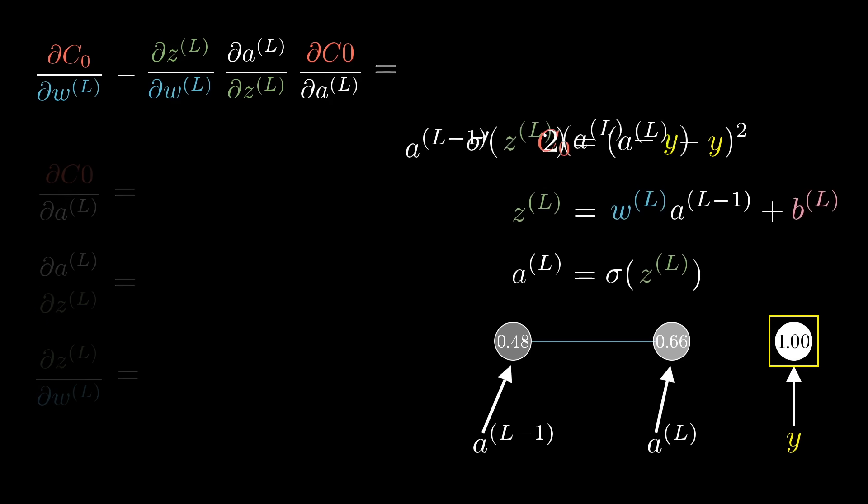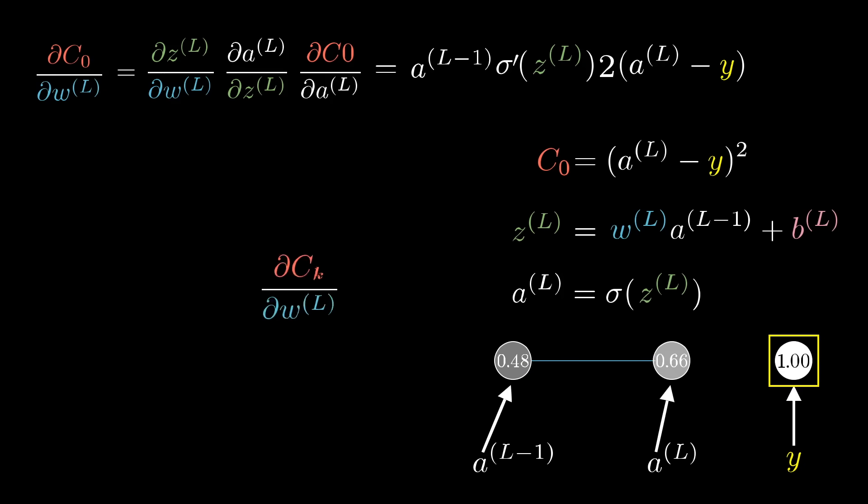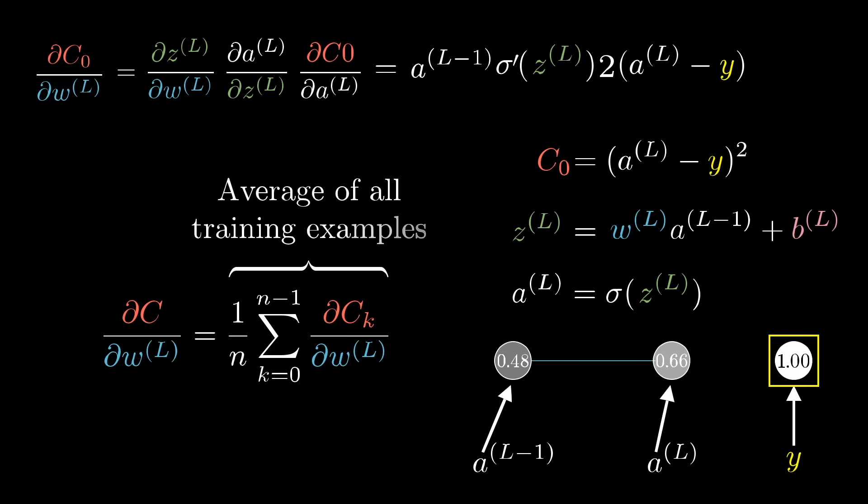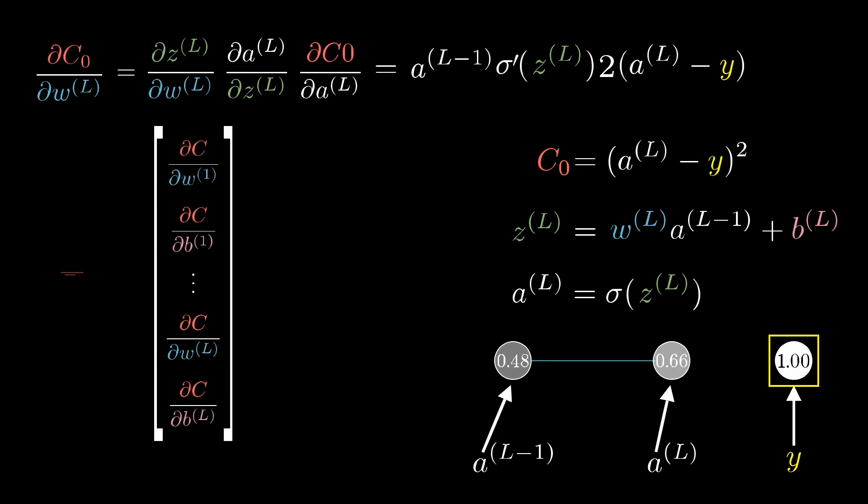And all of this is the derivative with respect to w^l only of the cost for a specific single training example. Since the full cost function involves averaging together all those costs across many different training examples, its derivative requires averaging this expression that we found over all training examples. And of course that is just one component of the gradient vector, which itself is built up from the partial derivatives of the cost function with respect to all those weights and biases.